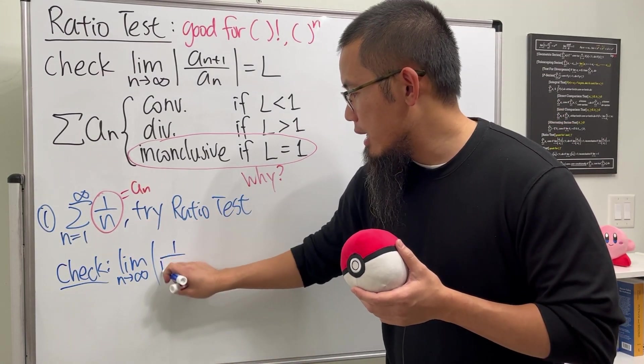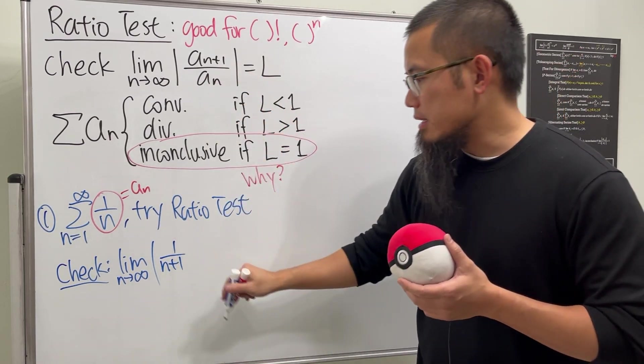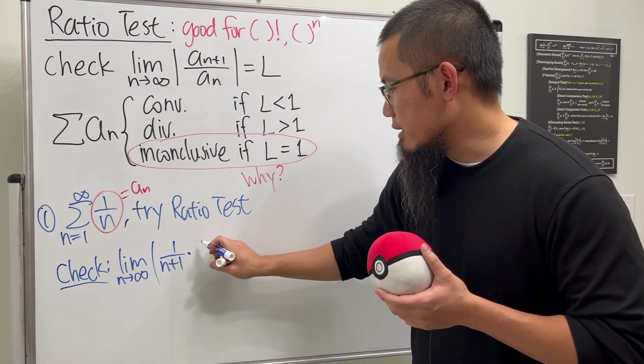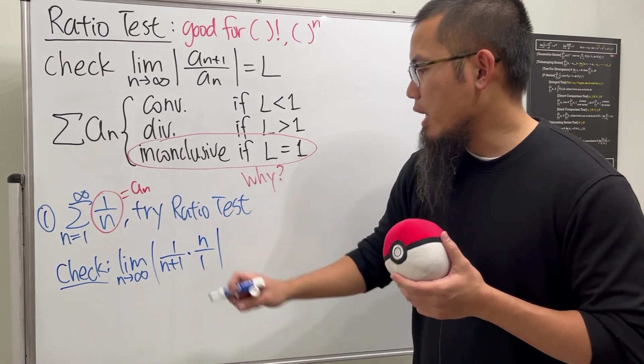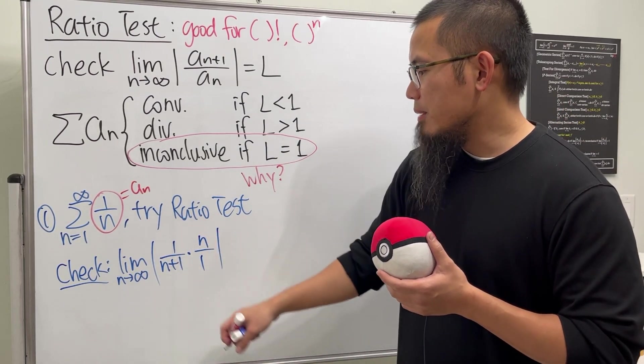Well, a_n plus one is just one over n plus one, and then divide it by a_n. It's the same as multiply by the reciprocal of a_n, so we can just put this down as n over one. And of course, multiply this out, you just have n over that.